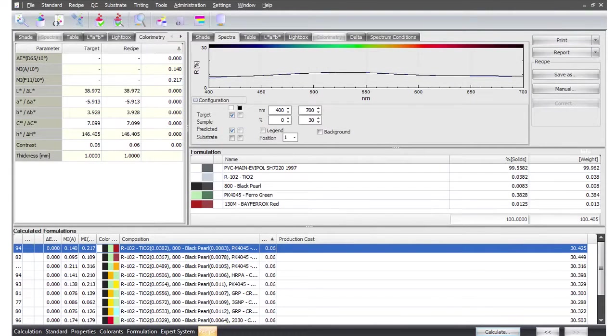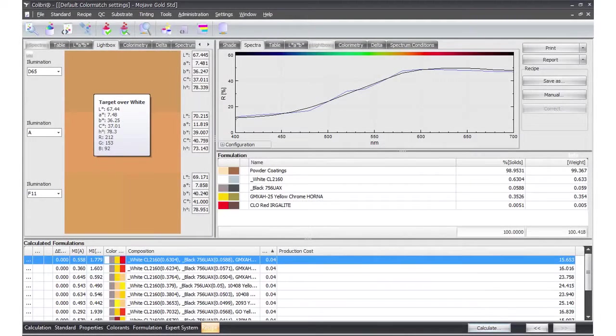The CM-2600D is also compatible with Calibri software to formulate color recipes for various applications and share real-time measurement data.